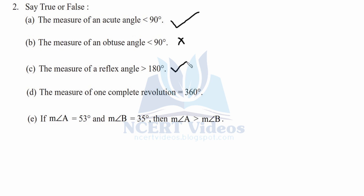Part D: the measure of one complete revolution is 360 degrees — yes, it is true, because we divide a circle into 360 parts or degrees. Part E: if the measure of angle A equals 53 degrees and the measure of angle B equals 35 degrees, then the measure of angle A is greater than the measure of angle B — true, because 53 is greater than 35. That was your second question.